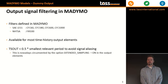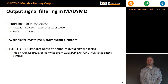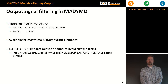This is available for most time history output elements. To avoid signal aliasing during output, it is recommended to use a TS-OUT that is smaller than 0.5, although all dummy models have extended sampling for their output and this should remove any aliasing problems.